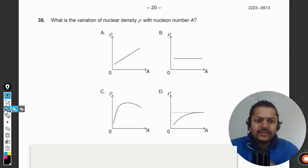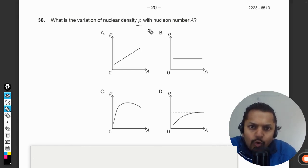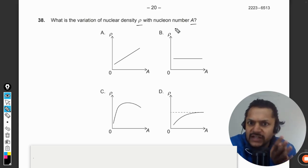Okay students, let us see what is there in this question. What is the variation of nuclear density ρ with the nucleon number A? If you have this question as a doubt, let me explain the background theory. Overall, the answer is B because the density is independent of the mass number and is constant for all nuclei.